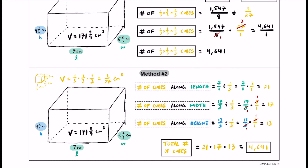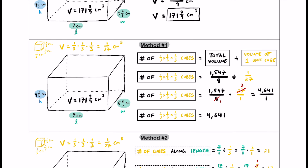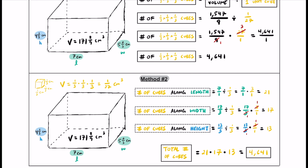So there are two different methods for figuring out how many one-third by one-third by one-third cubes fit inside this rectangular prism. In Method 1, we divided the total volume (171 and 8/9 cubic centimeters) by the volume of one unit cube (1/27) to get 4,641. In Method 2, we counted how many cubes fit in each of the three dimensions and multiplied those together, also getting 4,641.